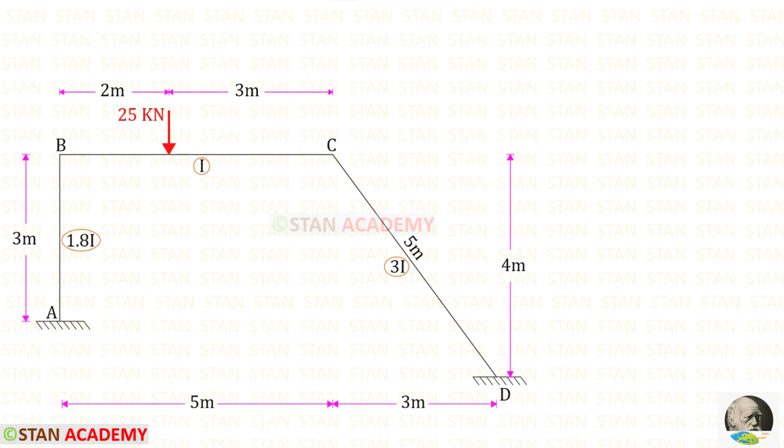We know that this frame is subjected to sway due to the unsymmetrical dimensions. Let us assume that the sway occurs towards the left side. We have to do the analysis two times: first, the non-sway analysis, and then the sway analysis.